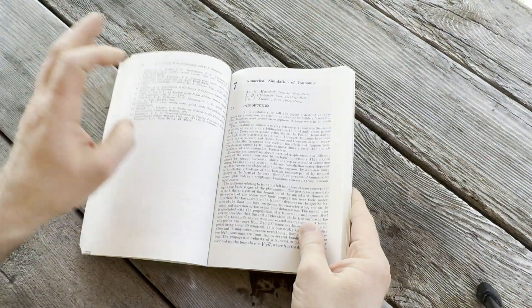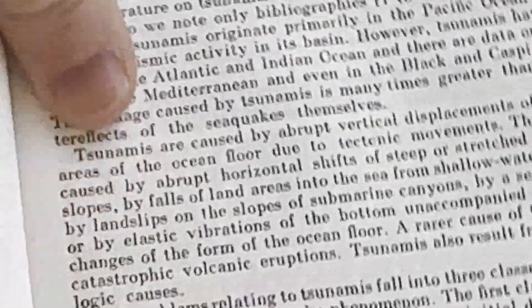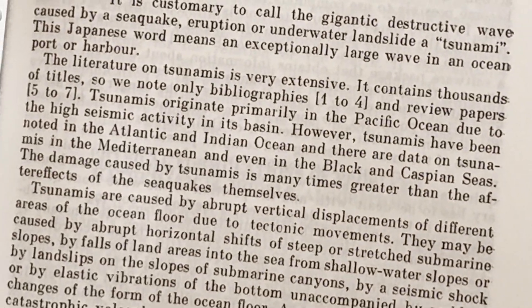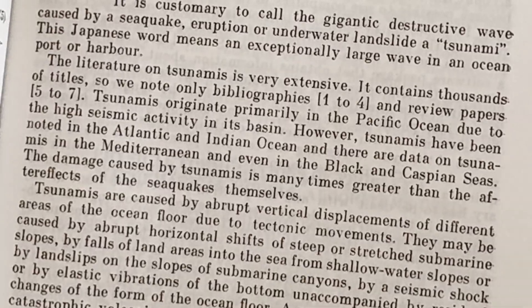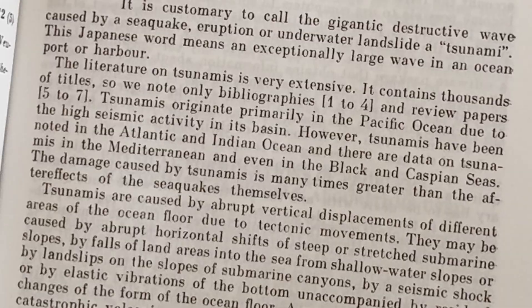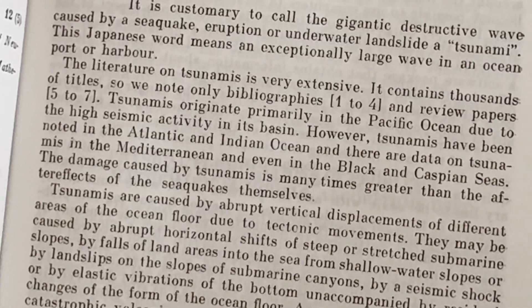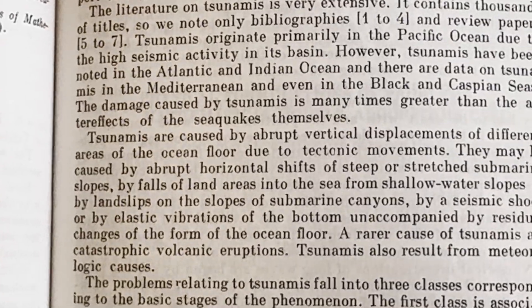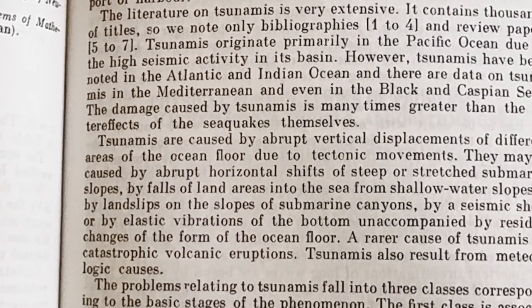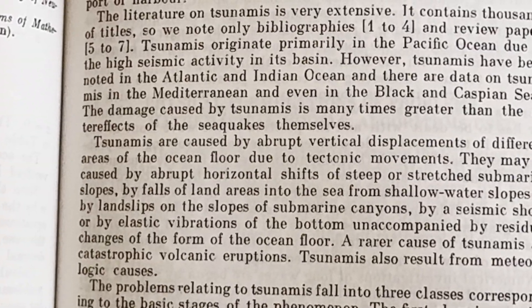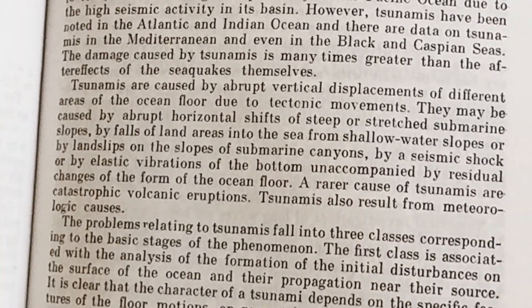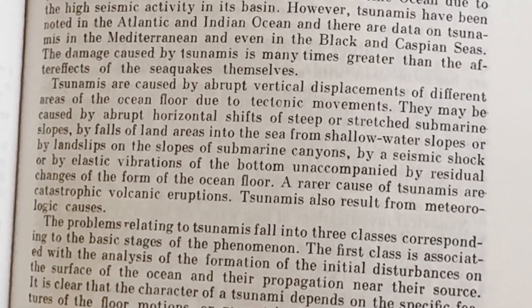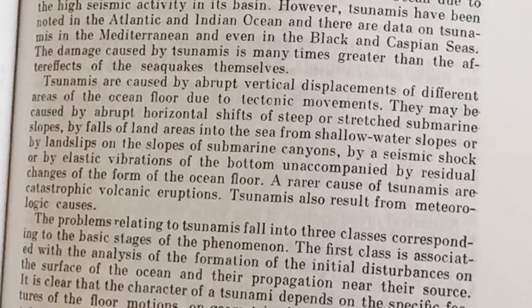Let's zoom in and take a closer look. Tsunamis originate primarily in the Pacific Ocean due to the high seismic activity in its basin. However, tsunamis have been noted in the Atlantic and Indian Ocean, and there are data on tsunamis in the Mediterranean and even in the Black and Caspian Seas. The damage caused by tsunamis is many times greater than the aftereffects of the sea quakes themselves. Tsunamis are caused by abrupt vertical displacements of different areas of the ocean floor due to tectonic movements. They may be caused by abrupt horizontal shifts of steep submarine slopes, by falls of land areas into the sea, or by landslips on the slopes of submarine canyons, by a seismic shock, or by elastic vibrations of the bottom unaccompanied by residual changes of the form of the ocean floor.